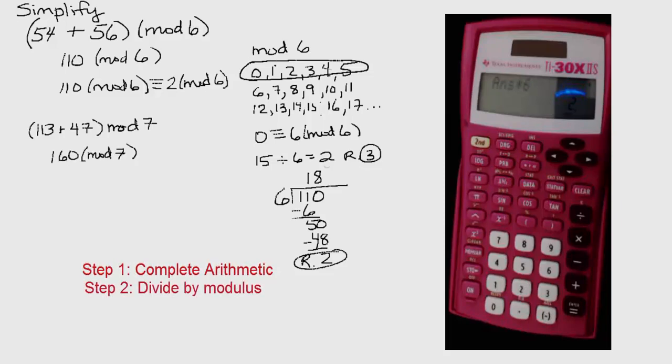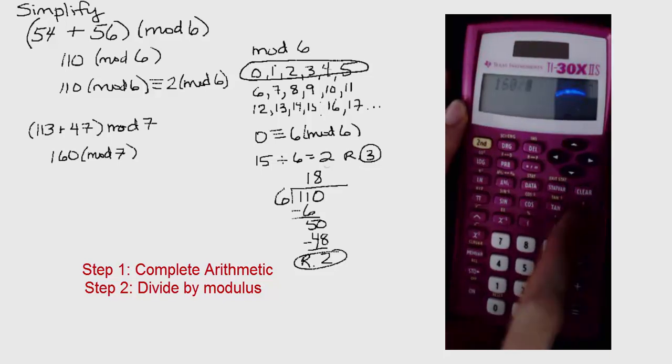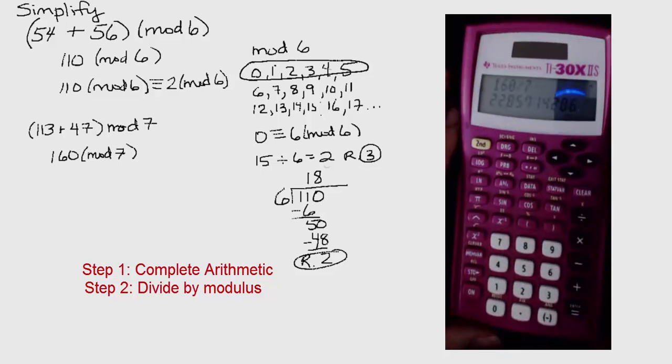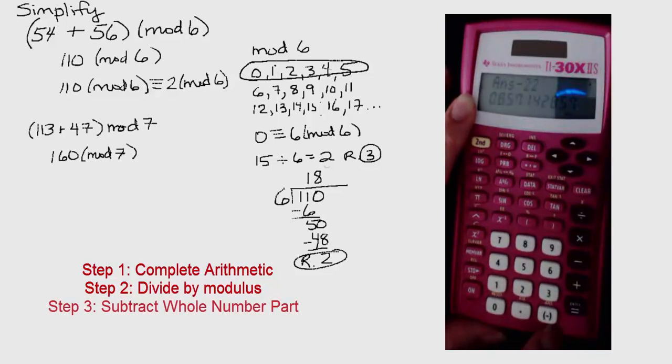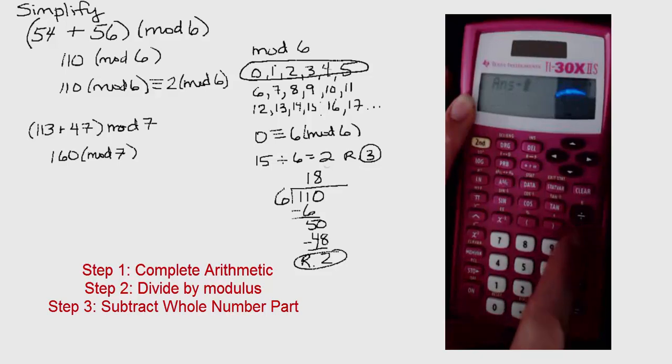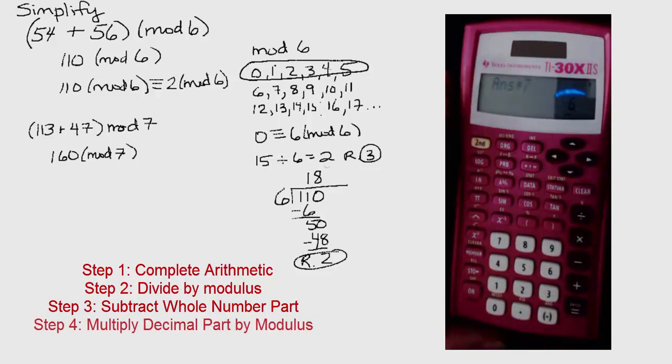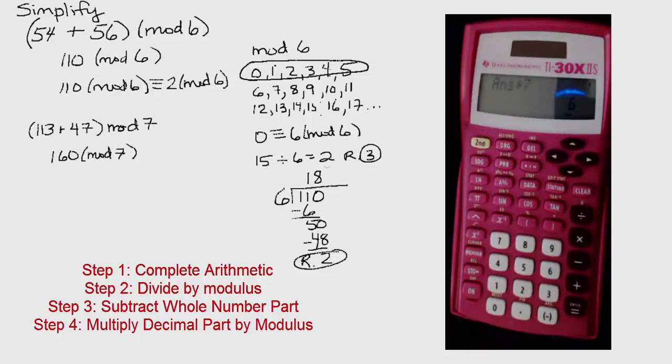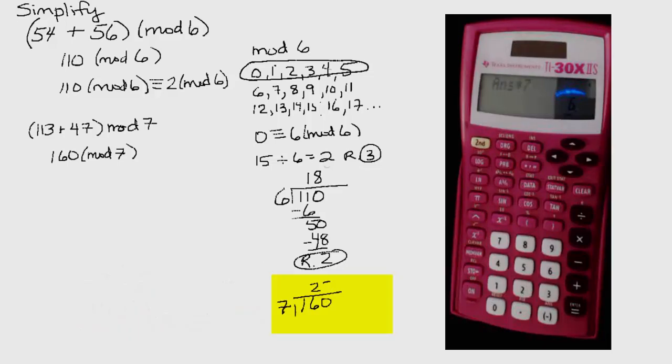Next, we are going to go back to our calculator. 160 divided by 7 gives us 22 with a remainder. Let's get rid of the 22 by subtracting that whole number part. And now, all we need to do is to multiply that decimal that's left by 7. And we get 6. This tells us that 160 divided by 7 would be equal to 22 with a remainder of 6. It's the remainder that's our residue in modular arithmetic. So, 160 is congruent to 6 mod 7.